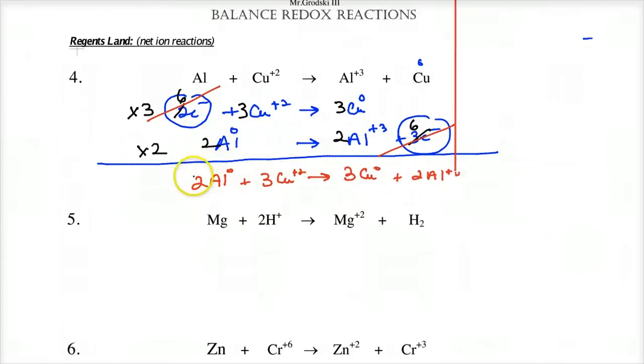I'm going to times this side by two because this gives me two times three, six electrons. And now my electrons are going to balance, and then I add everything together. Two aluminums plus three copper plus twos gives me three coppers plus two aluminum plus threes. I'm going to put this two right in there, this three right in there. And we're just looking at the redox part of this reaction.